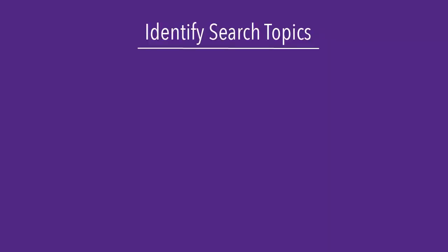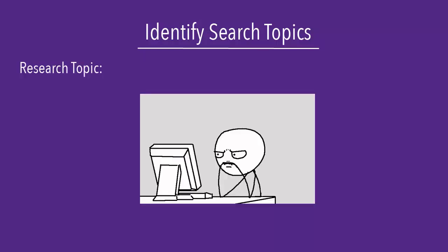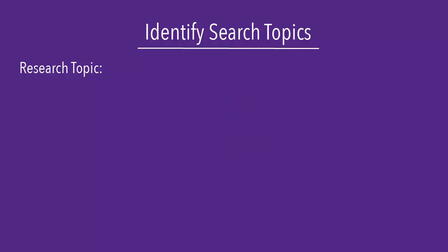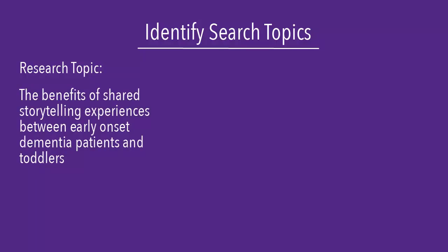Now that you know what a literature review is, you can start searching for articles. The first step is to identify your research topic. What is your working thesis statement? While you may be focused on a very specific topic, like the benefits of shared storytelling experiences between early onset dementia patients and toddlers, you will have to think a little more broadly for your literature review.